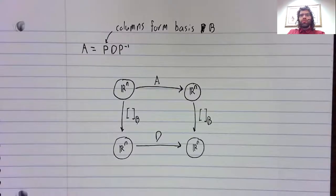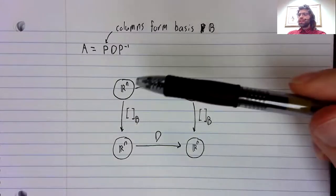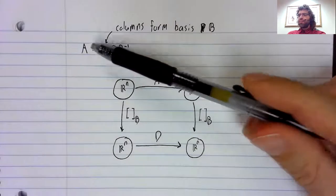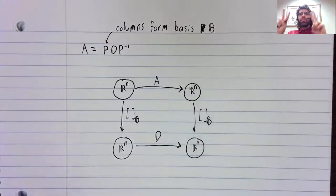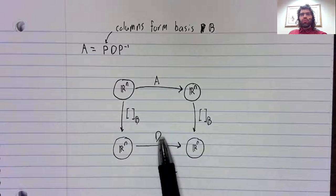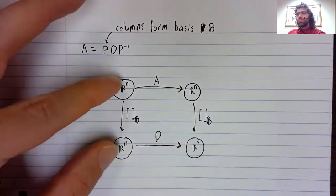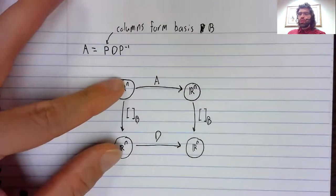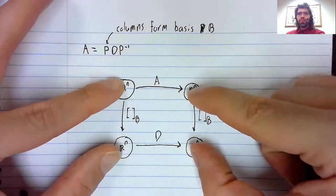We've seen this before in the last section. The idea that if you can diagonalize A, multiplying by A is basically like multiplying by the diagonal matrix, in the sense that these two spaces are isomorphic, these two spaces are isomorphic.